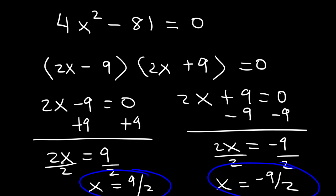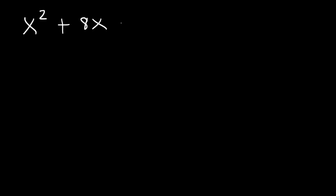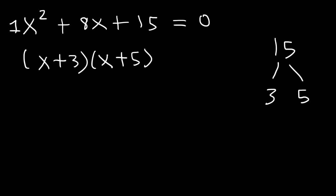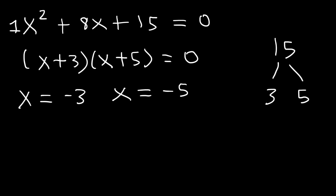That's how you can factor using the difference of squares method. Now sometimes you may need to factor a trinomial. If x squared plus 8x plus 15 is equal to zero, what is the value of x? If you have a trinomial where the leading coefficient is 1, find two numbers that multiply to 15 but add to the middle coefficient, 8. We know 3 times 5 is 15 and 3 plus 5 adds up to 8. So to factor it, it's x plus 3 times x plus 5, giving x equals negative 3 and x equals negative 5.